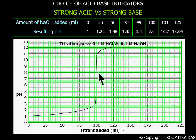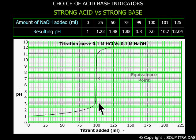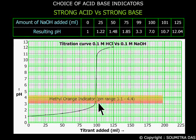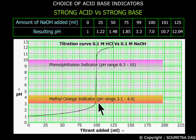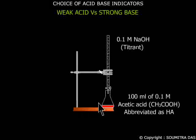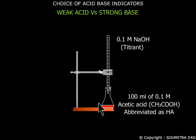In this curve, this vertical region is where the equivalence point lies midway. So an indicator in this pH range is suitable. We can see here that both methyl orange and phenolphthalein indicators are suitable in the titration of strong acid with strong base. Now let us see the titration curve of a weak acid.